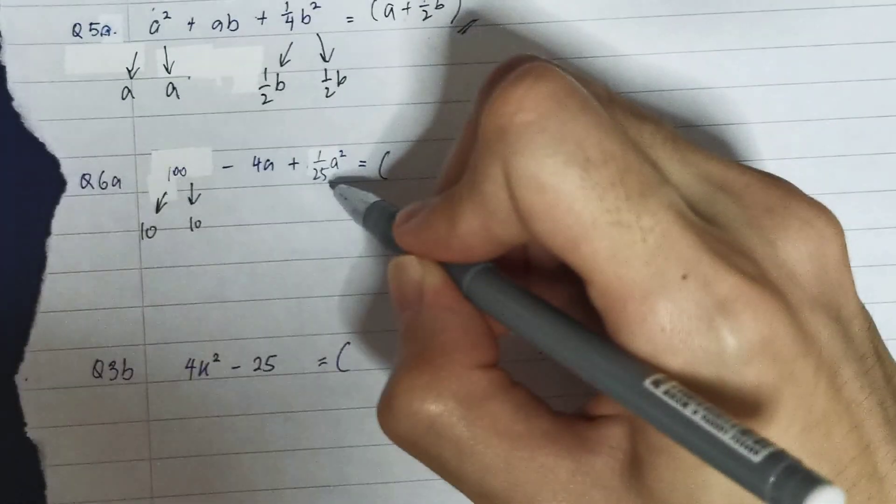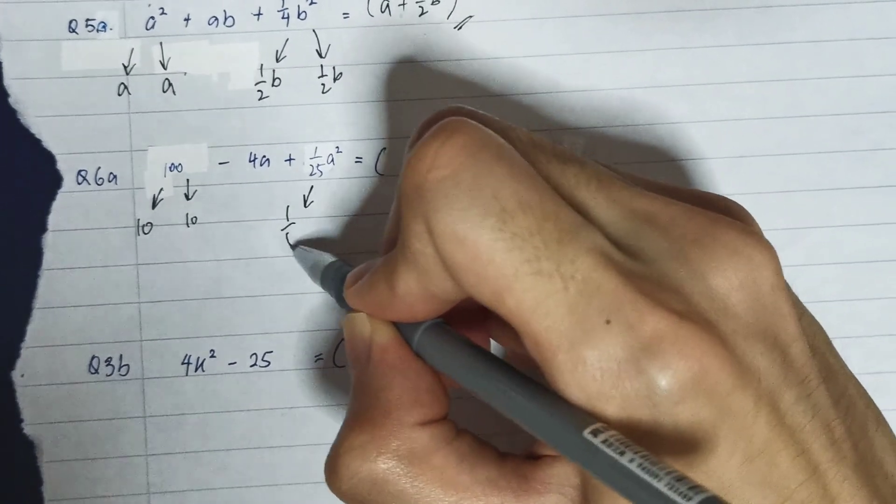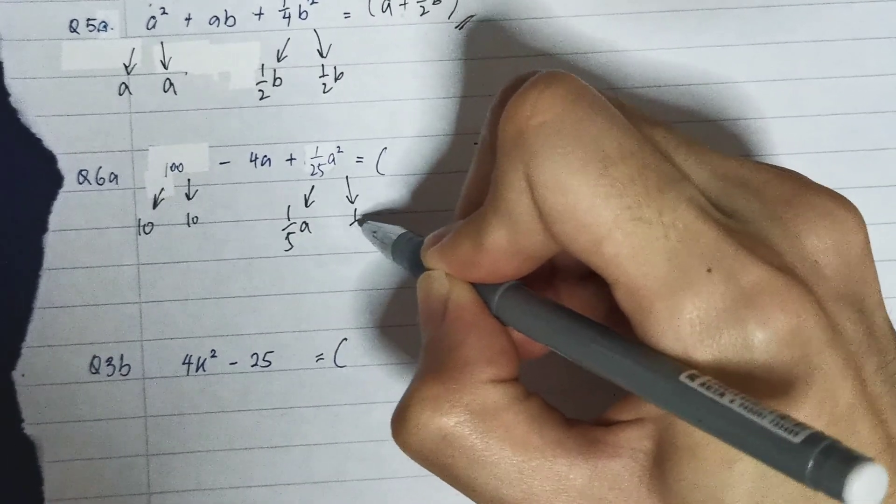And for 1/(25a²), it's also a square number, because it's made out of 1/(5a) times 1/(5a).